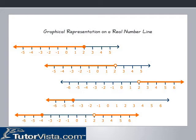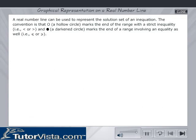Graphical Representation on a Real Number Line. A real number line can be used to represent the solution set of an inequation. The convention is that a hollow circle marks the end of the range with a strict inequality (less than or greater than) and a darkened circle marks the end of a range involving an equality as well (less than or equal to or greater than or equal to).